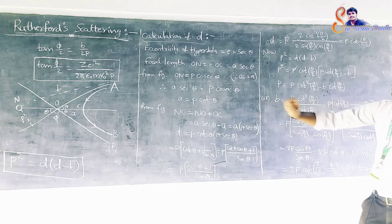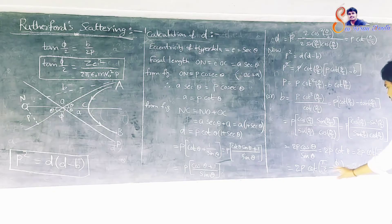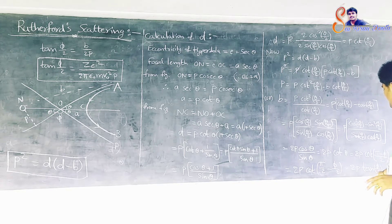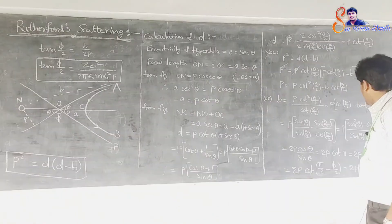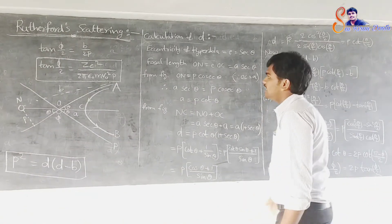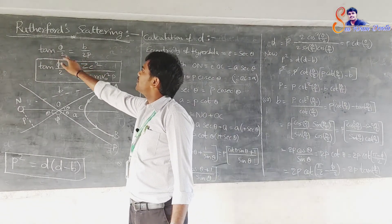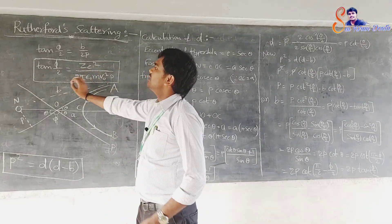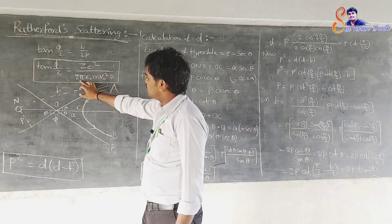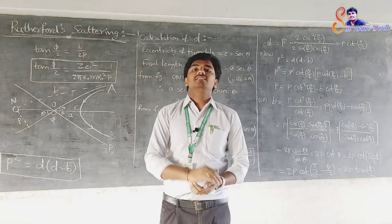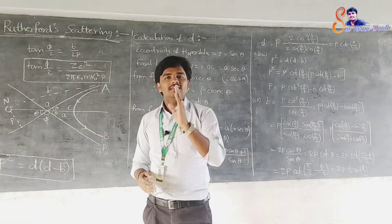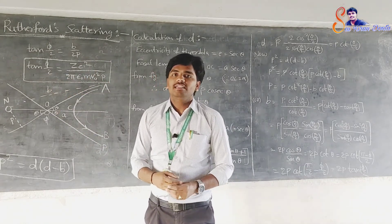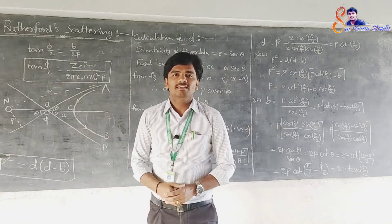We have the value for θ as π minus θ/2. So cot becomes tan, giving B equals 2P·tan(θ/2), and therefore tan(θ/2) equals B by 2P. Substituting the value of B, tan(θ/2) is equal to Ze² by 2πε₀Mv₀²P. This equation determines the scattering angle θ. It is clear that the smaller the value of P, the greater will be the scattering angle θ, if the remaining terms are the same. This is the summary of Rutherford's Scattering.